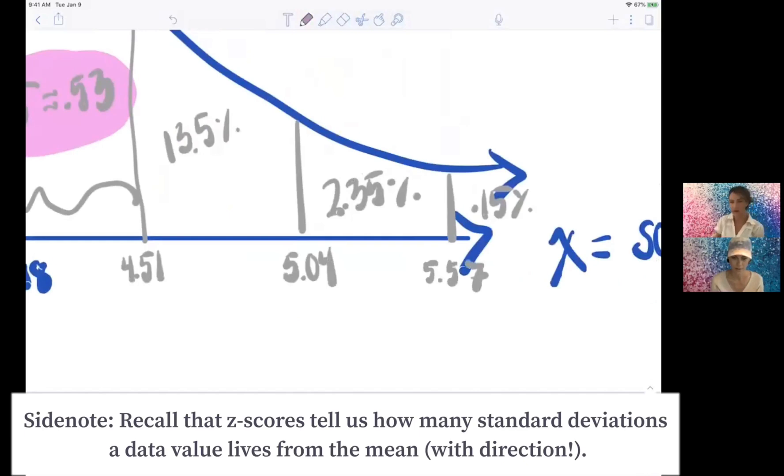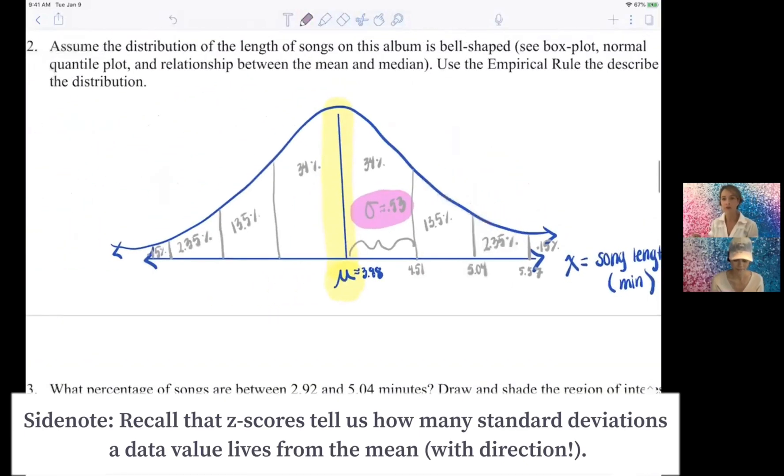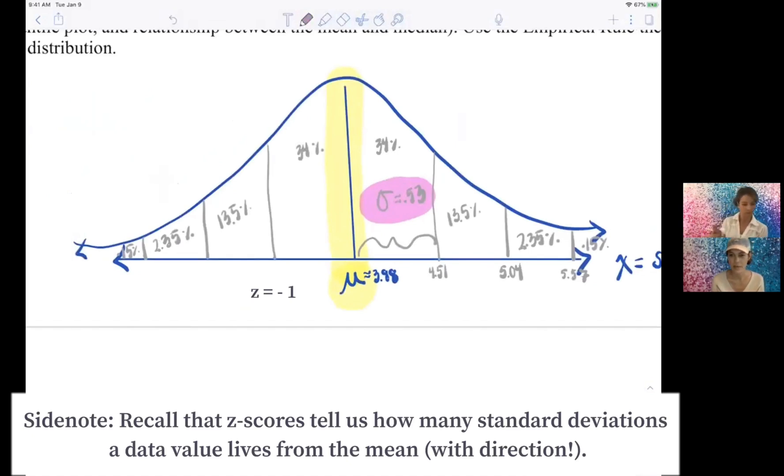And that's probably enough. We could go further if we need to, but we know we've got almost all of the data by, yeah, okay. Talk to me about like, z is negative one or one. Yeah, when we go to the left we can subtract 0.53.